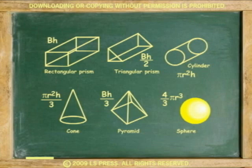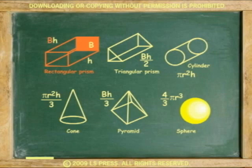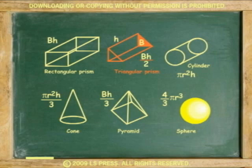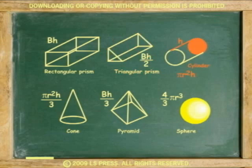These formulas define the volume of certain shapes. The rectangular prism, which is the area of the base times height or length. The triangular prism, which is the area of the continuous cross section times height or length. The cylinder, which is the area of the circle times height or length.